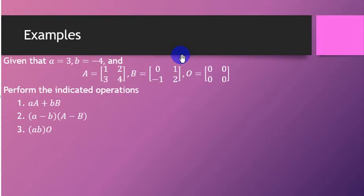So, let us have some examples. We're given that A equals 3, B equals negative 4, and the following matrices, including a zero matrix.